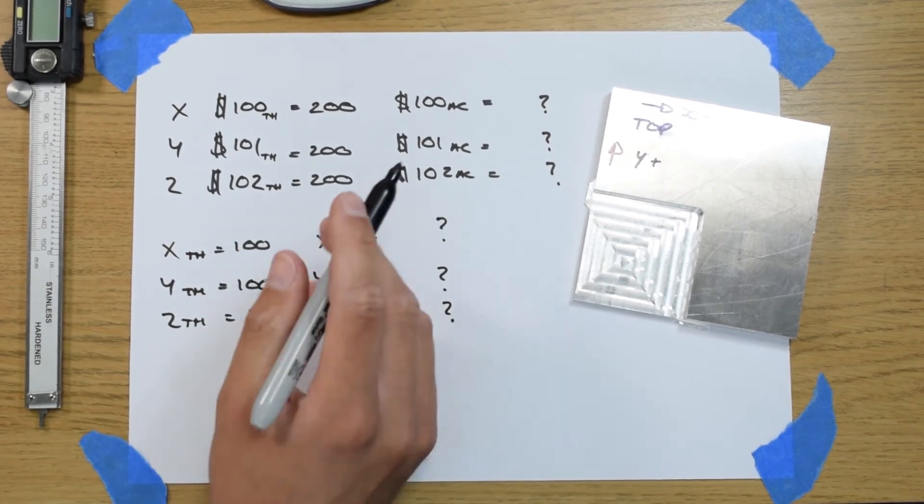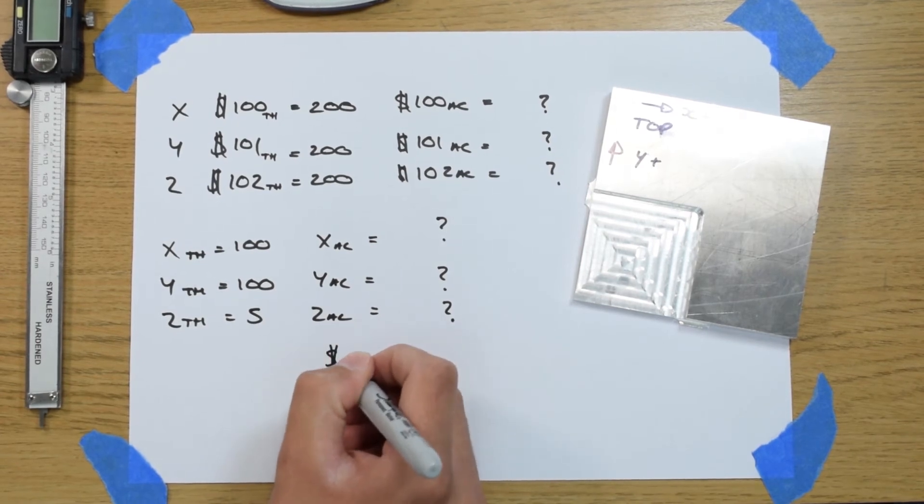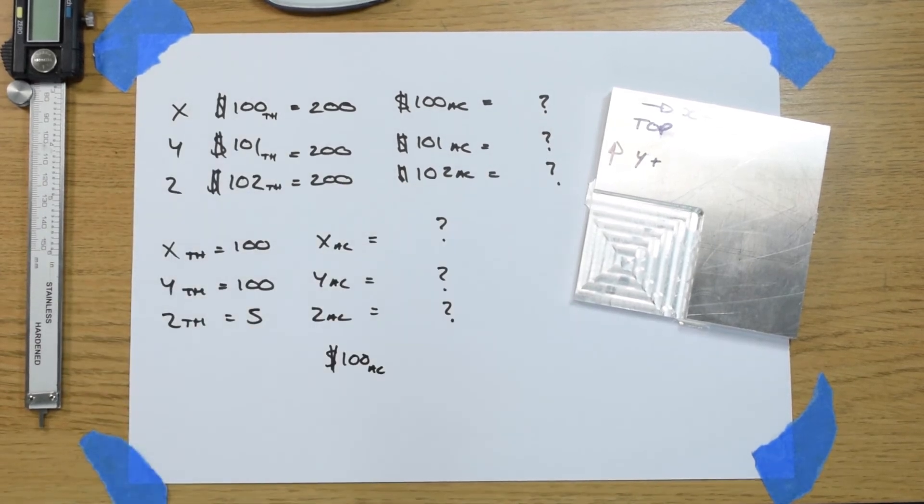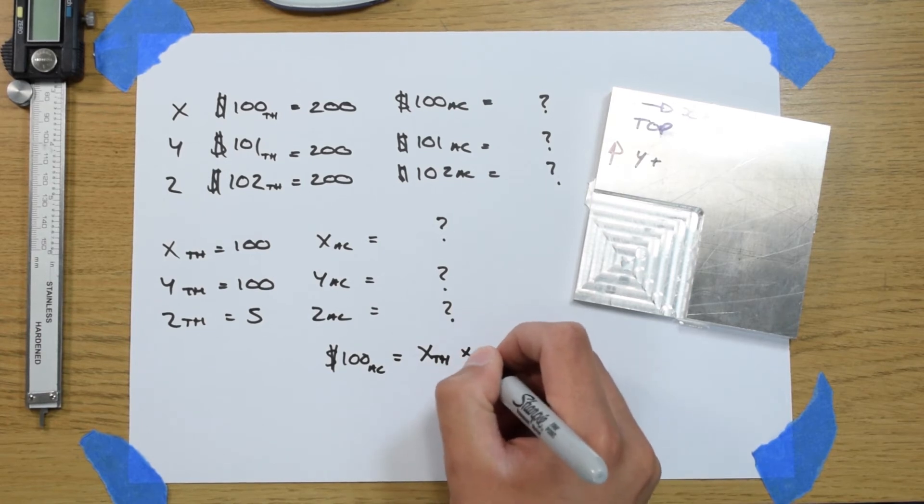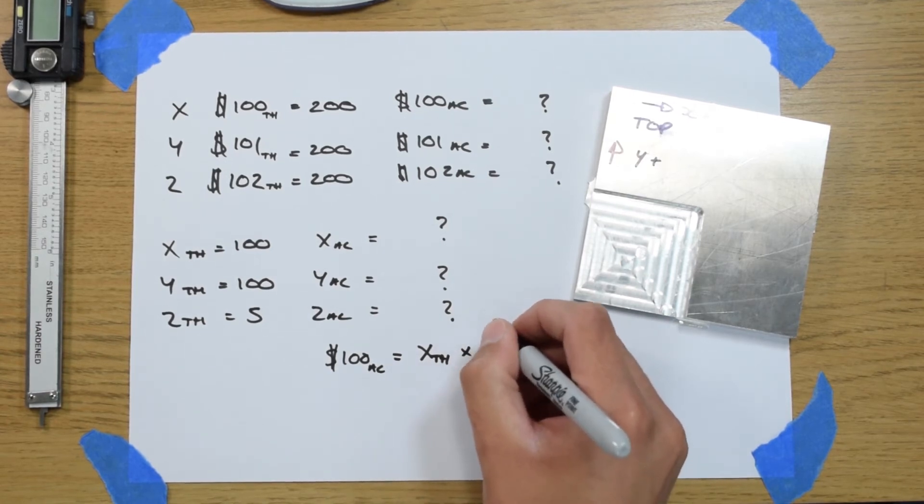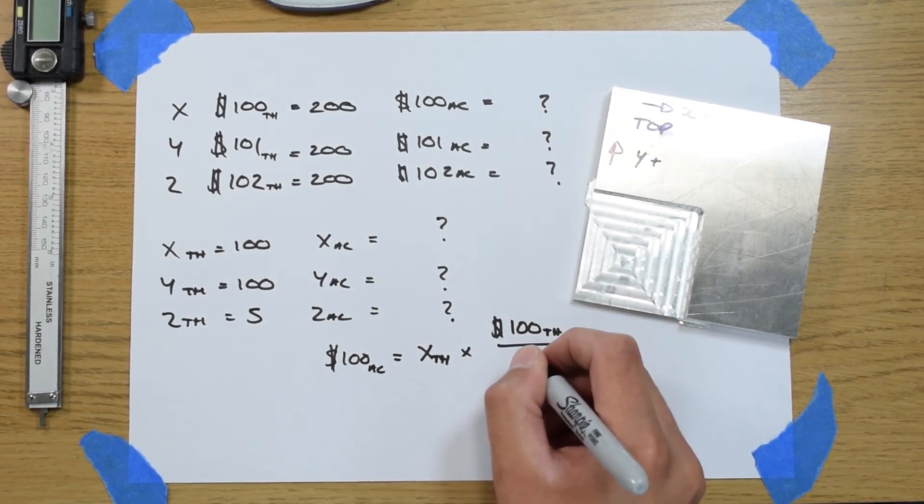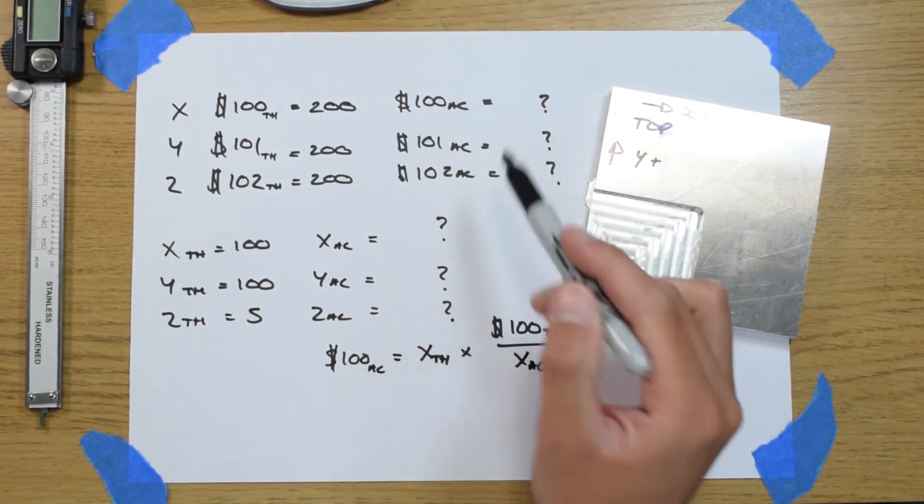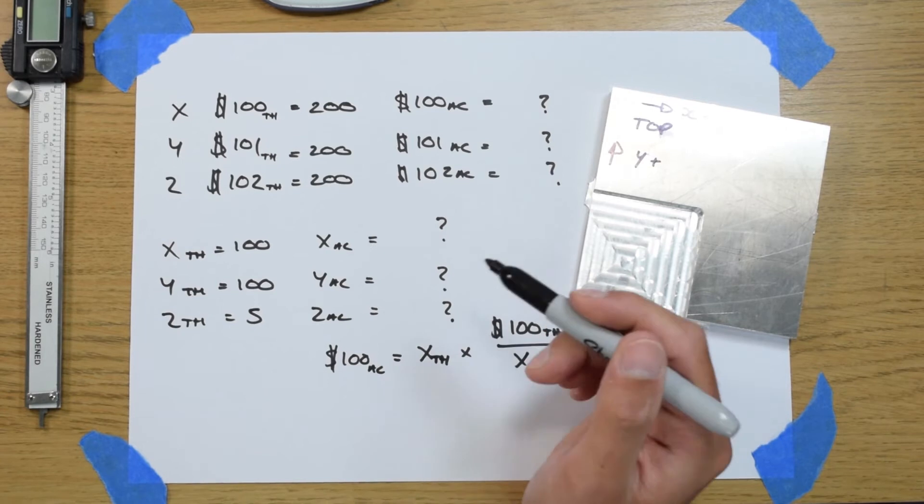Once we've measured these we will then use this formula to work out our actual values. So this is $100 actual. I will use the X axis as an example. Equals our X theoretical value times by our $100 theoretical value divided by our X actual value. And this will give us the X for example. And then we'll change these values up to Y and Z. So what we need to do next is measure these three values.